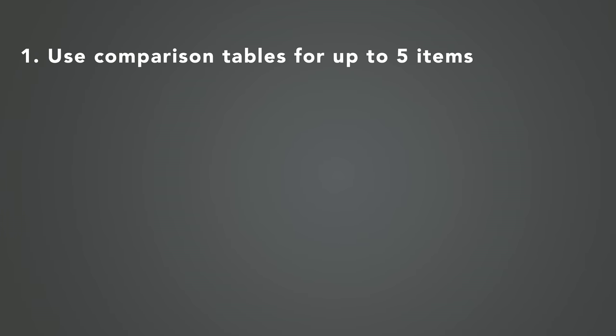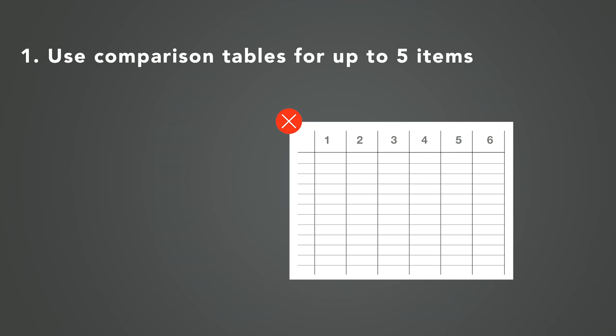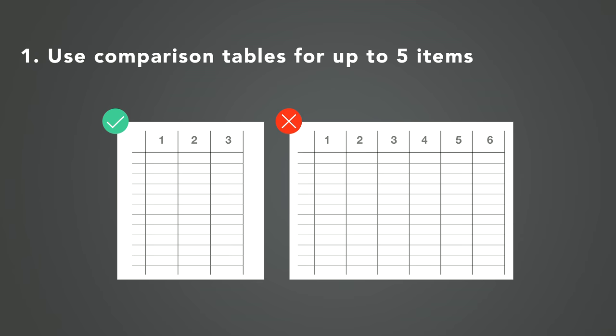Here are three quick tips for making sure that your comparison tables are useful and usable. Only use a comparison table if your users will be comparing five options or fewer. Five items is really the maximum here. In practice, most comparison tables are limited to three to four options. If you have too many options for users to compare, the table format becomes overwhelming — more overwhelming than useful.